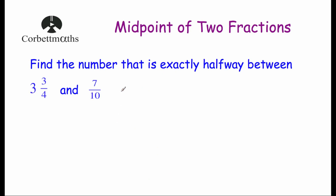Let's look at our last example. Find the number that is exactly halfway between three and three-quarters and seven-tenths. Three and three-quarters is a mixed number, so let's change it into a top-heavy fraction. Three times four is twelve, plus three is fifteen, so that's fifteen-quarters. We want the number exactly halfway between fifteen-quarters and seven-tenths, so we'll add these two together. The common denominator of four and ten — twenty would be a good choice.